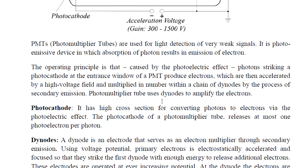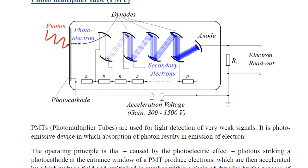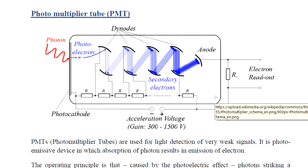A photomultiplier tube uses dynodes to amplify the electrons. If we have a voltage signal, we have to amplify the voltage signal. We have to amplify the light energy. That is actually what photomultiplier tubes do.